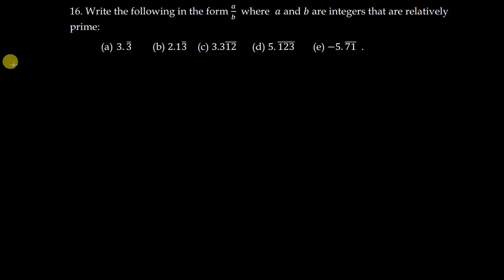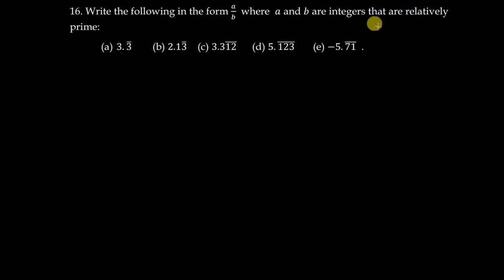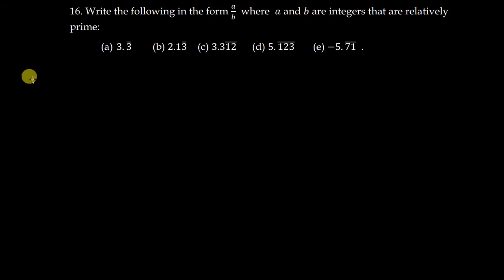Let's quickly begin. According to this question, it reads: write the following in the form a over b, where a and b are integers that are relatively prime. This is simply the definition of rational numbers — a rational number is a number that can be expressed in the form a over b, where a and b are members of integers.